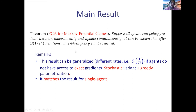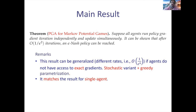You might say this is not realistic — how can agents be independent yet use the gradient of their value functions? We also have results for the case without access to exact gradients. Suppose every agent has no clue about his value function or the potential function. He only observes his rewards. For many episodes, he observes his reward and creates an estimate of the gradient just from samples.